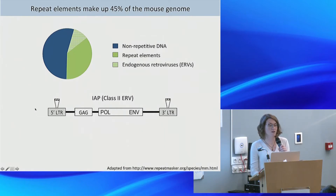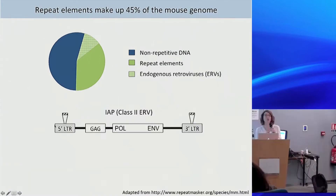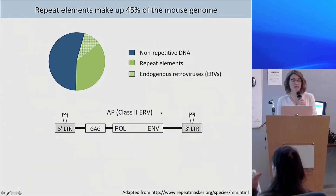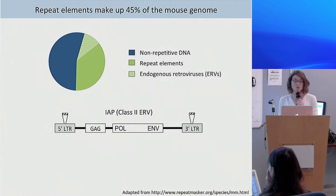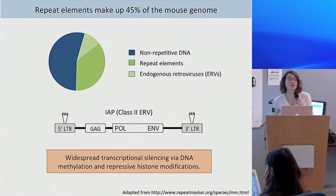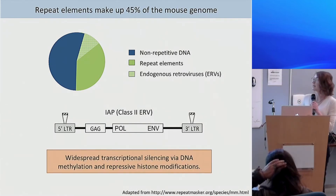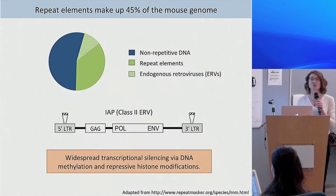IAPs have long terminal repeat sequences on either side, five prime and three prime, and then coding sequences in the middle that allow retrotransposition when it's full length. Because of this, we see widespread transcriptional silencing via both DNA methylation and repressive histone modifications to prevent potentially deleterious events caused by retrotransposition.